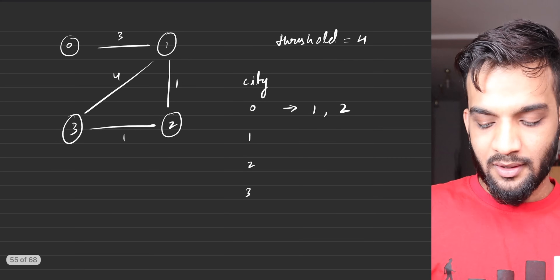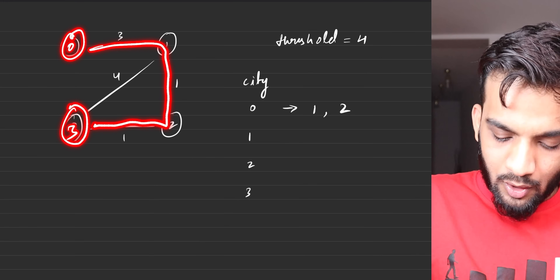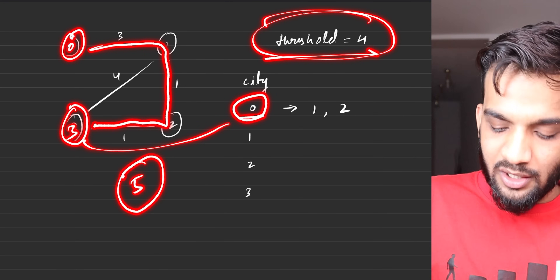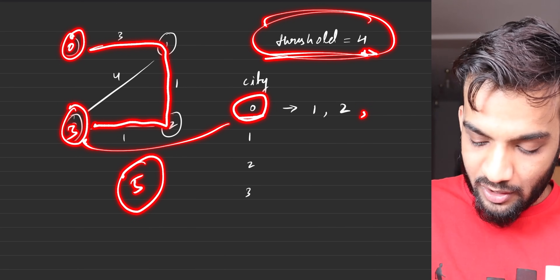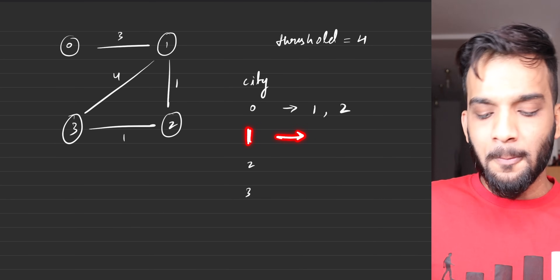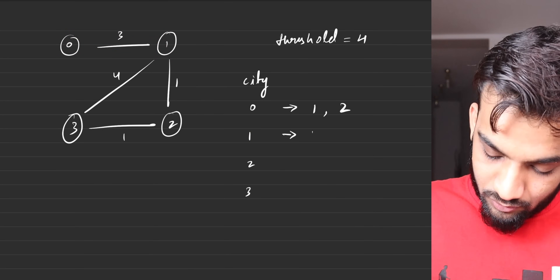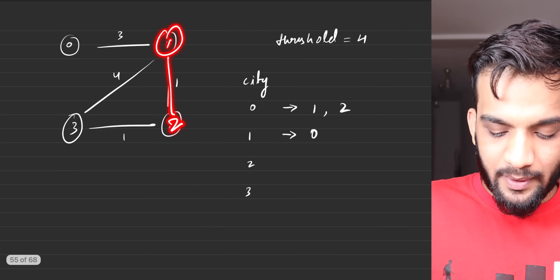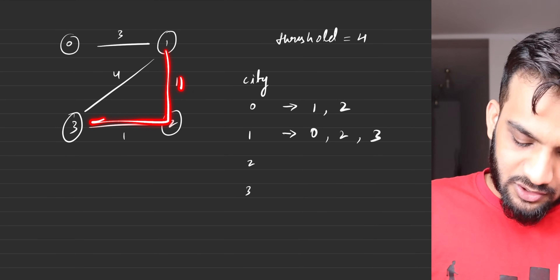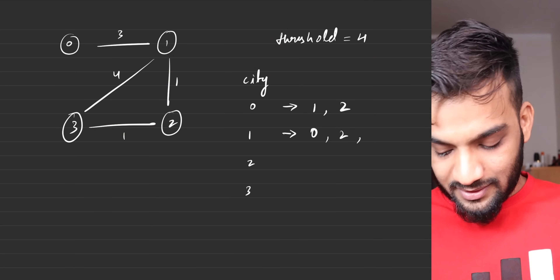Now from 0 to 3: in the shortest possible path it's going to take 5, which crosses the threshold, so I cannot go from city 0 to city 3. So from city 0 we can go to 1 and 2. Similarly from city 1: you can go to 0 because it takes a distance of 3, and you can go to 2 which takes 1 — both under the threshold. You can also go to 3 because taking that path costs 2, which is under the threshold.